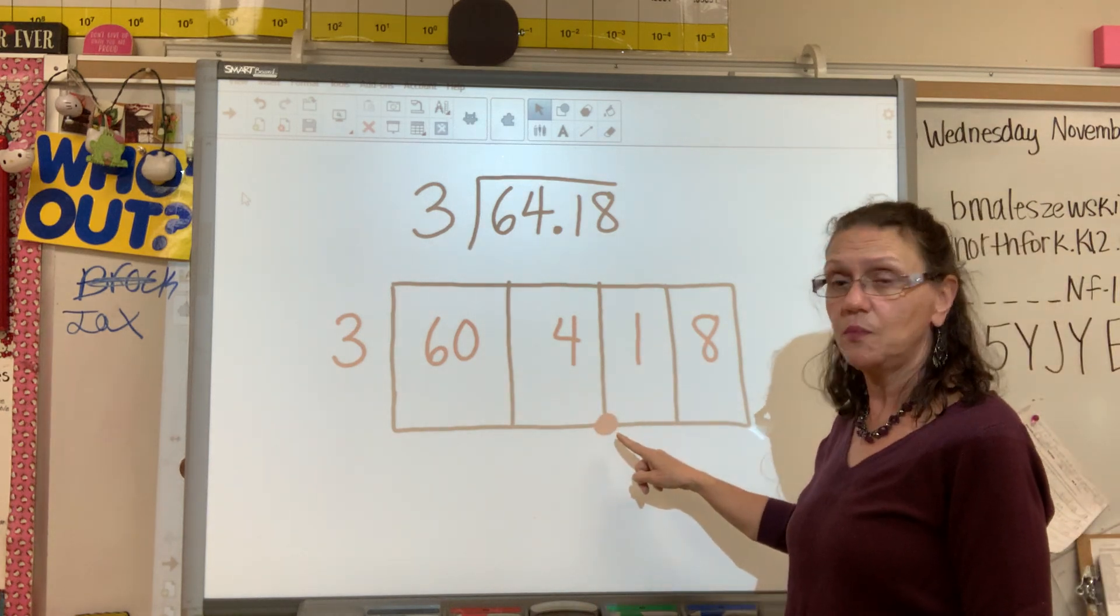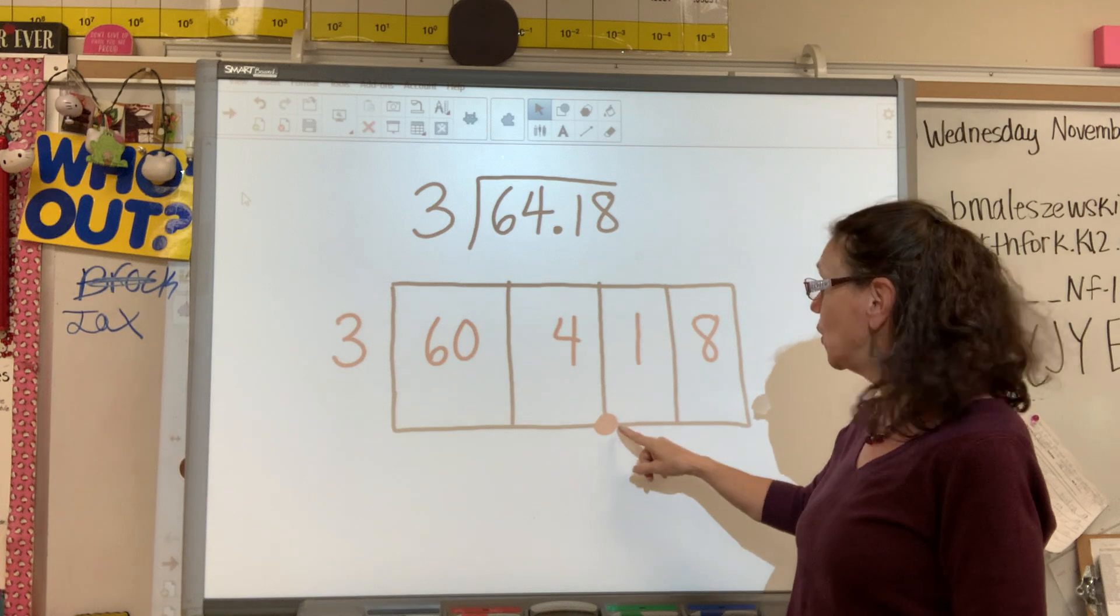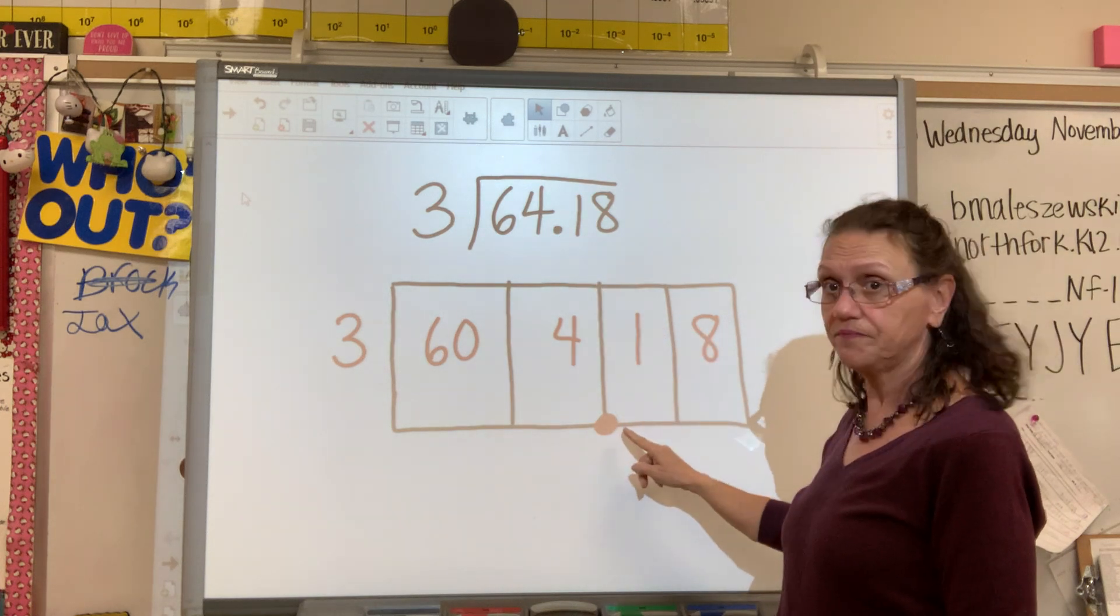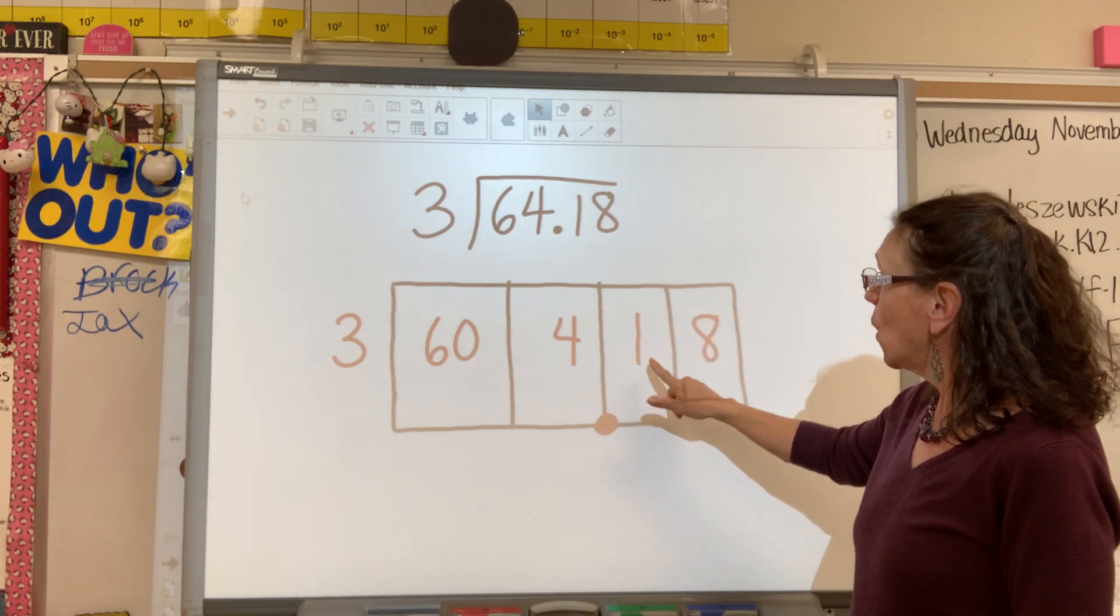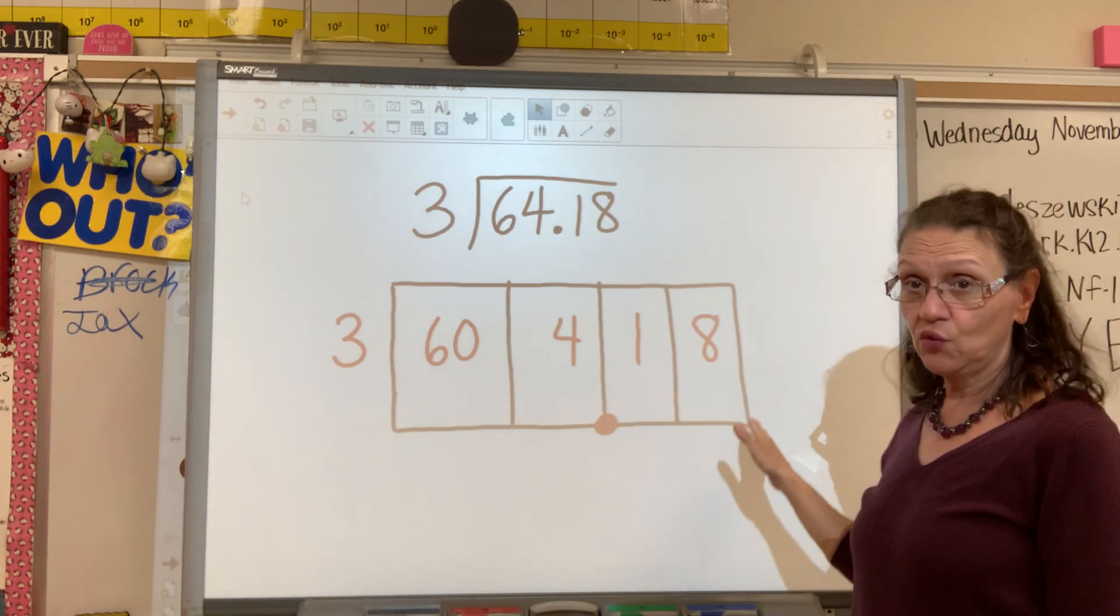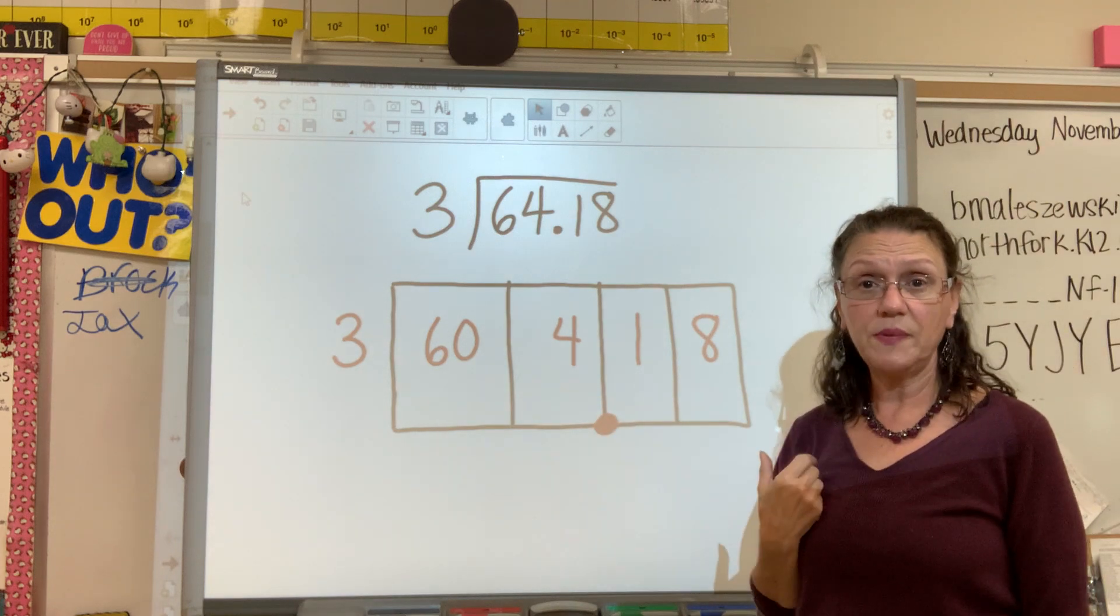I put my decimal, that's this big old red dot here. I put my decimal where it is in my question. Then I include my one-tenth and eight-hundredths. So it looks like this. This is how we begin.